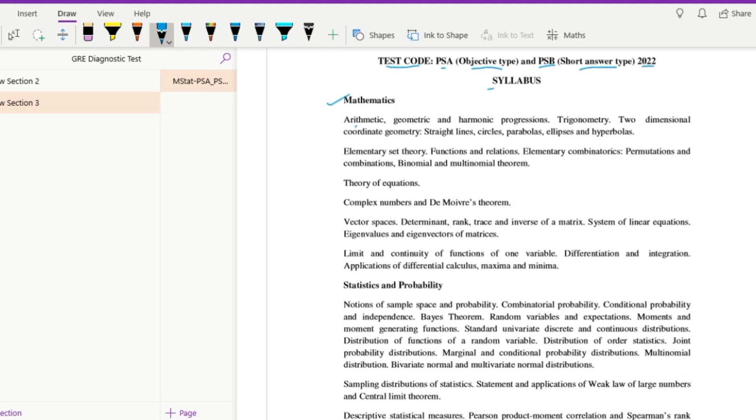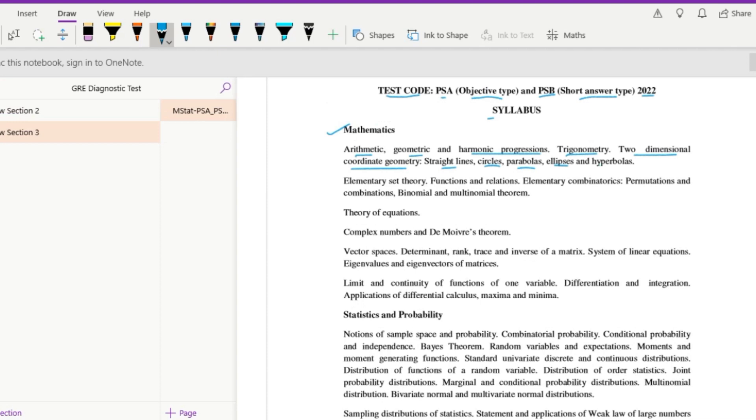Starting with mathematics we have arithmetic, geometric and harmonic progressions, then trigonometry, two-dimensional coordinate geometry, straight lines, circles, parabolas, ellipses and hyperbolas.